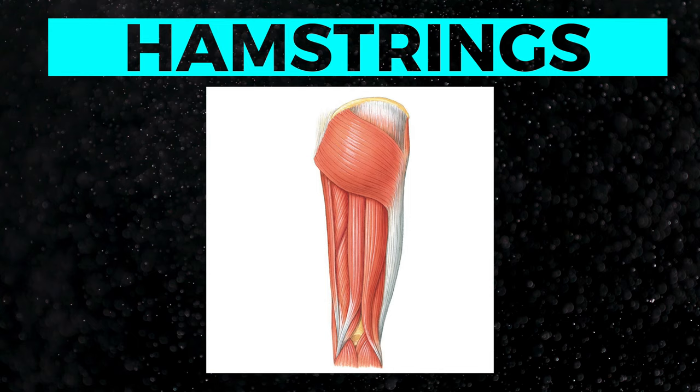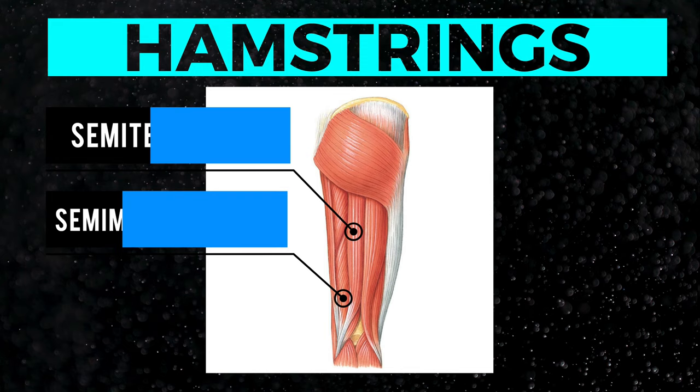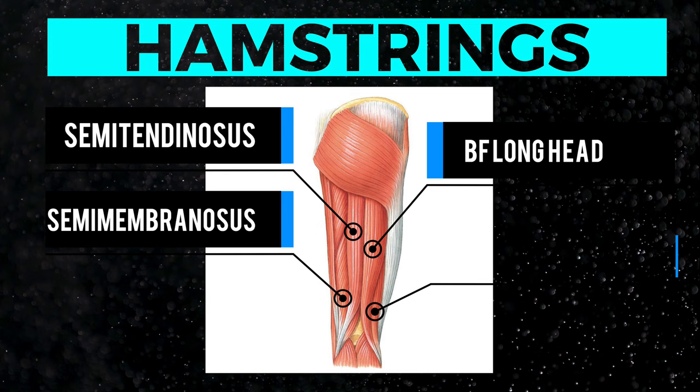In order to optimally develop the hamstrings, we need to understand their anatomy, their biomechanical function, their length-tension relationship, and how to practically apply this information. The hamstrings are made up of three muscles, one of which has two heads: the semimembranosis and semitendinosis on the medial side, and the biceps femoris long head and biceps femoris short head laterally.